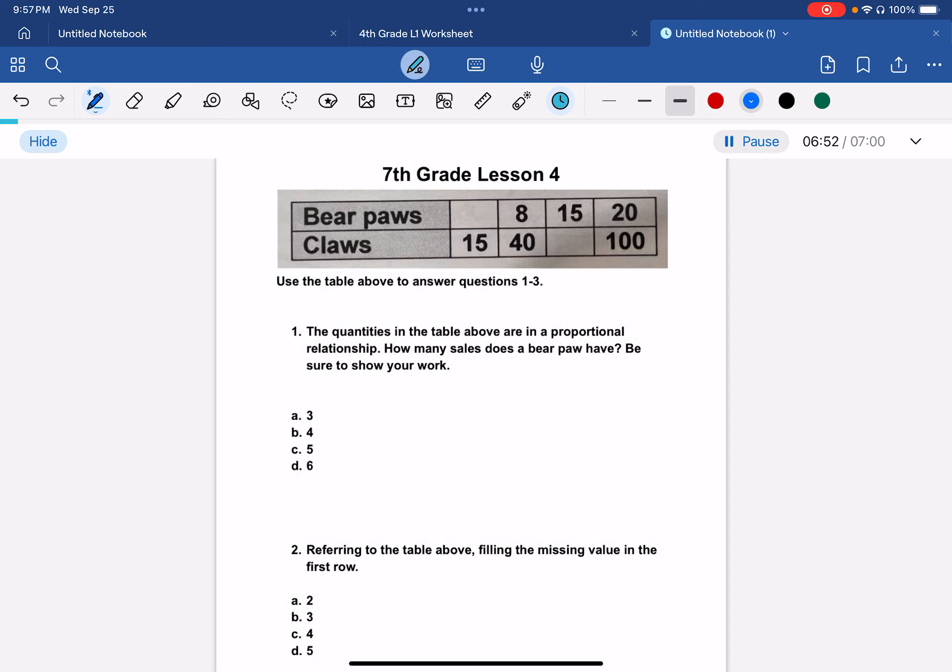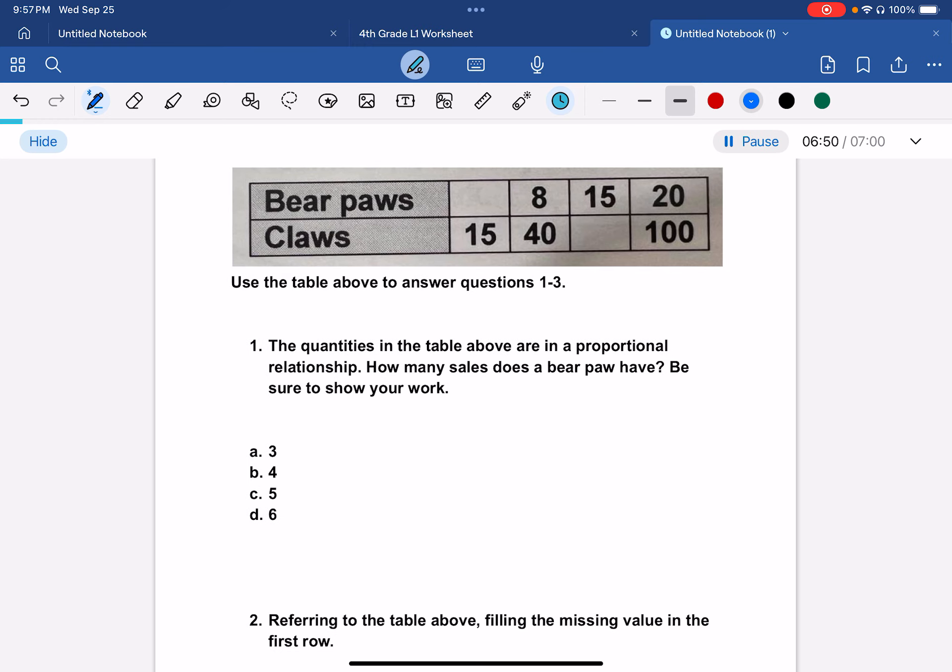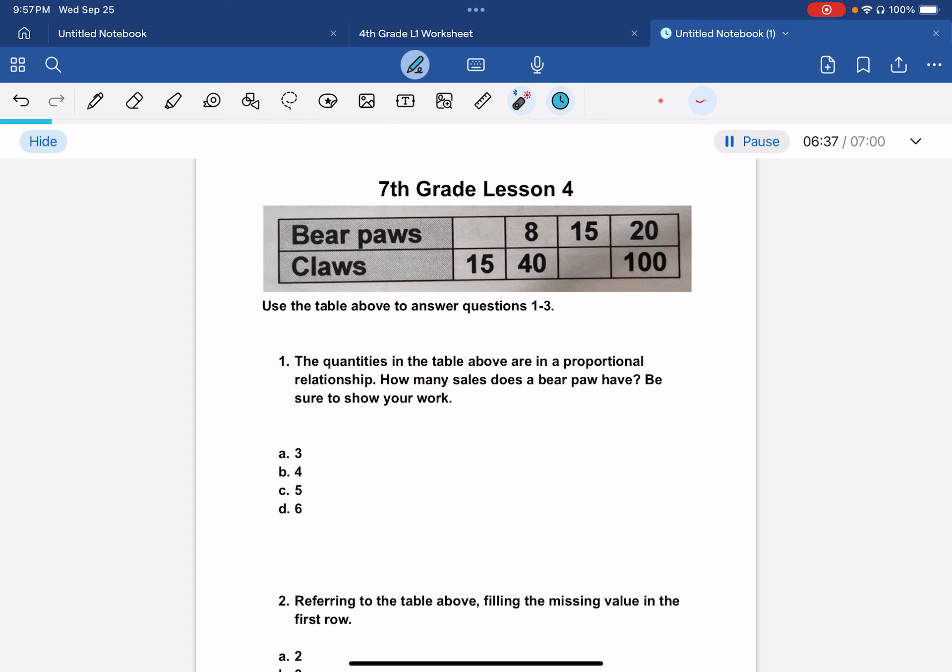Hello everyone, today we're going to be doing 7th grade math lesson 4. Okay, it says the quantities of the table above are in a proportional relationship. How many sails does a bear paw have? Be sure to show your work.